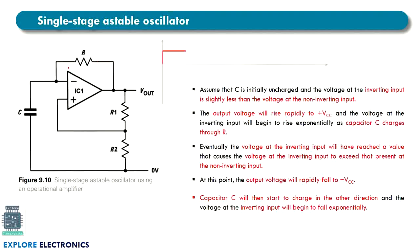This high output voltage stays for some time. Because Vout is high, current flows through resistor R to charge the capacitor. Once the capacitor is charged, the inverting terminal voltage becomes greater than the non-inverting terminal voltage. Because of this, the output of the circuit reduces to minus Vcc, and this voltage stays for some time.